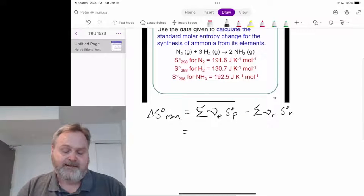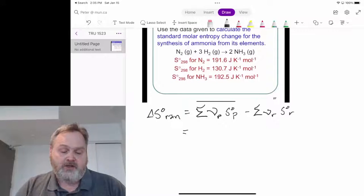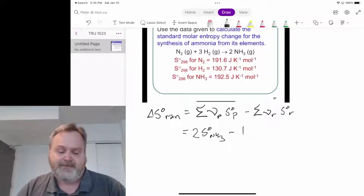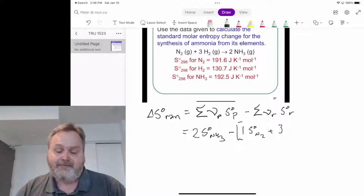In this particular case, that would end up being two times the entropy of ammonia minus - and this is going to be a sum - the entropy of nitrogen plus three times the entropy of hydrogen.